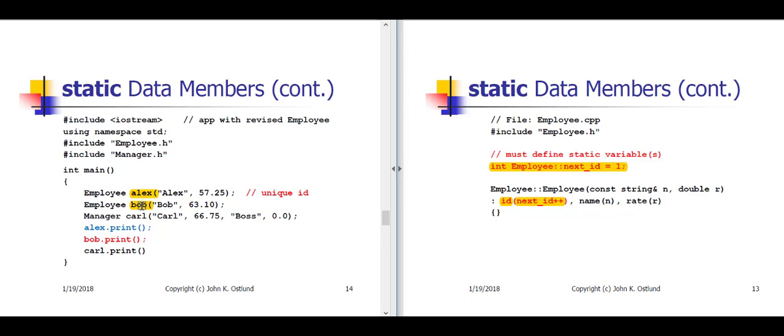Next we create employee object Bob. In the constructor, the ID for Bob is initialized with 2, the current value of nextID, and then nextID is post-incremented to become 3. Bob's name is initialized with the string Bob and his rate with 63.10. So we now have two employee objects: Alex with an ID of 1 and Bob with an ID of 2, and the next available ID is going to be 3.